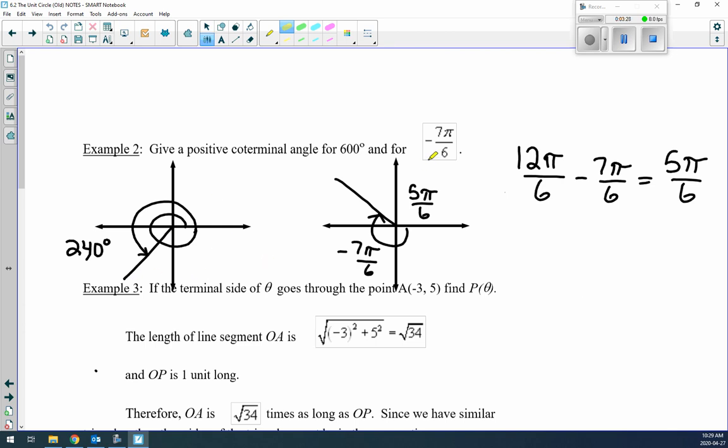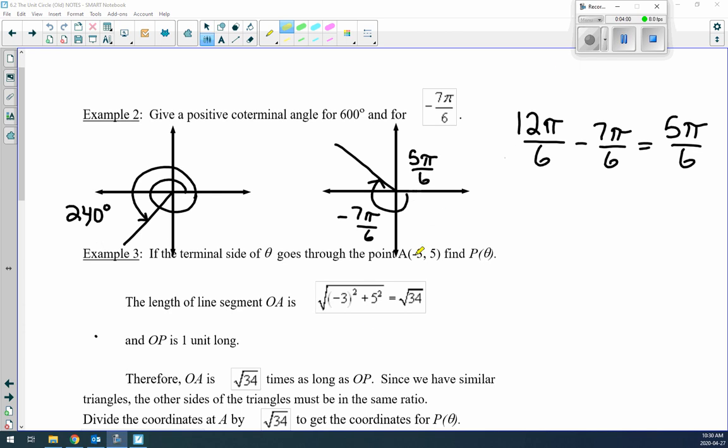What about -7π/6? If you go around the unit circle once, that's 2π. Another way to write 2π is 12π/6. So 12π/6 subtract 7π/6 is 5π/6. We start the initial arm and go back negative 7π/6, ending up here in quadrant 2, and the coterminal angle for that one, if it was positive, is 5π/6.